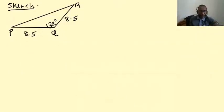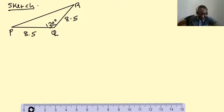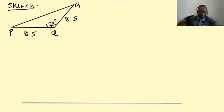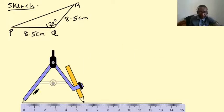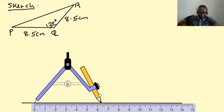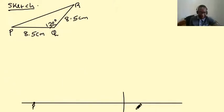Now we need to have the actual diagram. So we first draw our reference line. And on this reference line, we need to measure off the length of 8.5 centimeters. So we get our compass, we need to measure off 8.5 centimeters. So this is point P, this is point Q, and between here we have 8.5 centimeters.